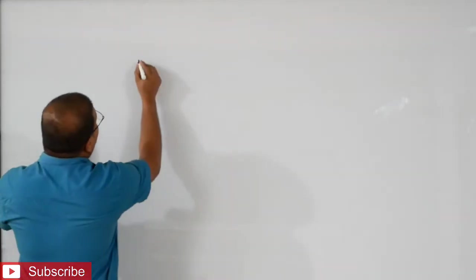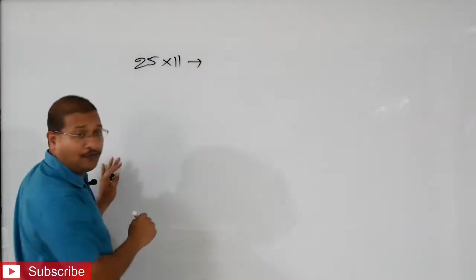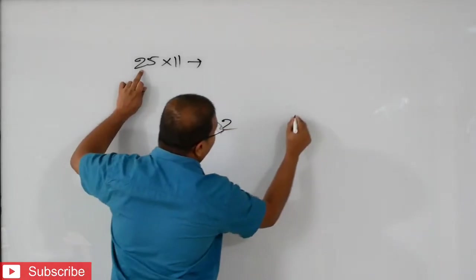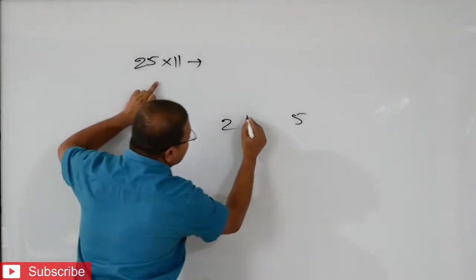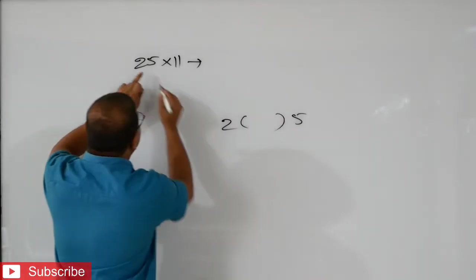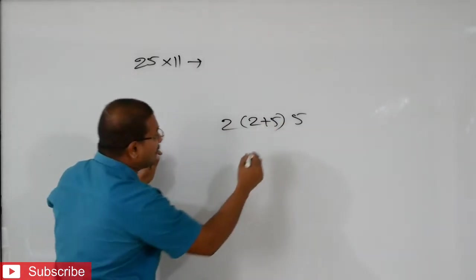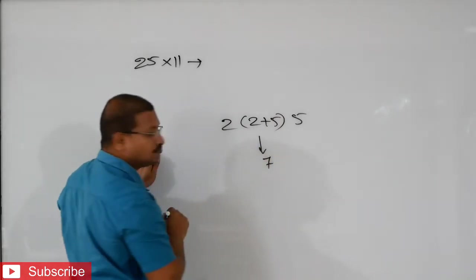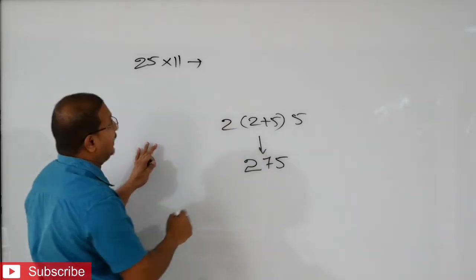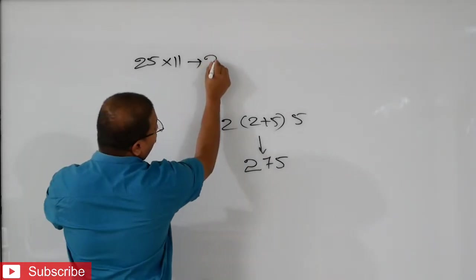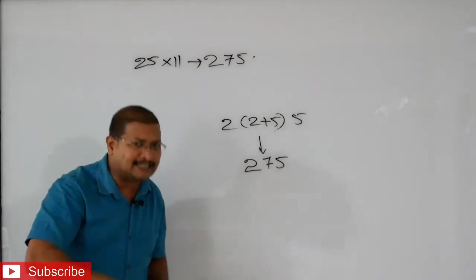Now, if I multiply 25 into 11, what we will do? 2, 5 will write. After that, in the middle, 2 plus 5. That means 7. And this 2 will write and this 5 will write. That means we will get 2, 7, 5.